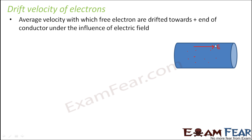Until and unless you do not apply this electric field, the electrons do not get drifted. But the moment you apply an electric field, the electrons get drifted in the opposite direction of the applied electric field. So if the applied electric field E is in this direction, then the electrons will get drifted in the opposite direction with a velocity which is the drift velocity. The direction of drift velocity of an electron is always opposite to the direction of the applied electric field.